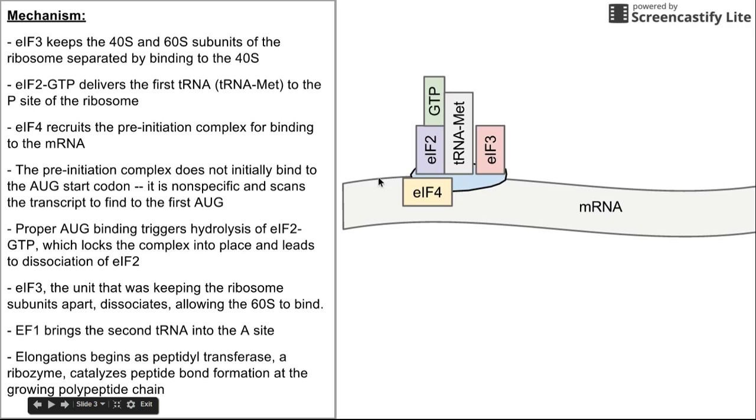Now the pre-initiation complex doesn't bind directly to the start codon. It doesn't bind to the first AUG. It needs to scan the mRNA back and forth looking for that AUG.